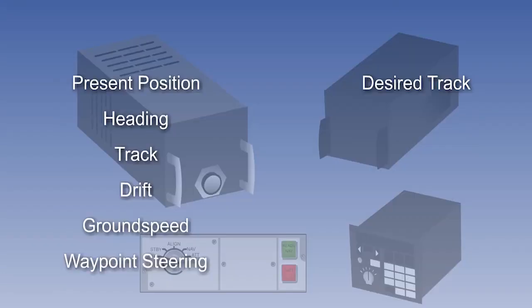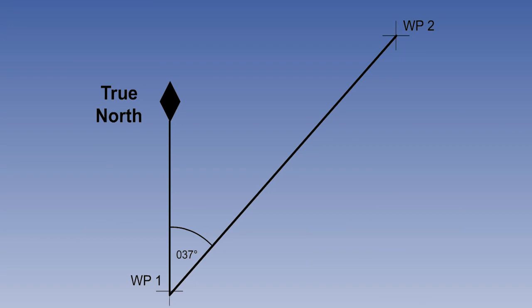With waypoint steering, the INS will display the desired track between any two waypoints. For instance, the desired track between waypoint 1 and waypoint 2, in this example, is 037 degrees true.